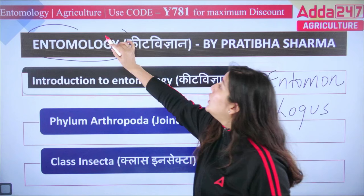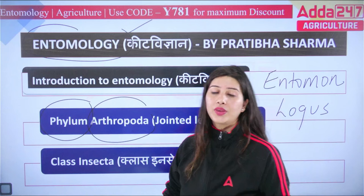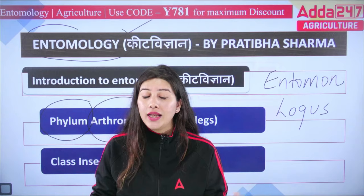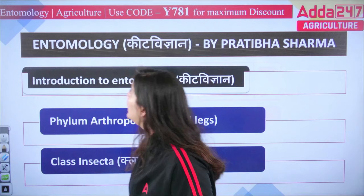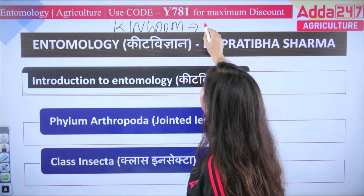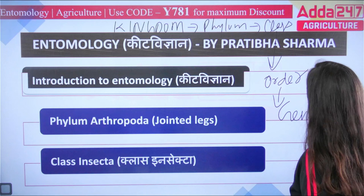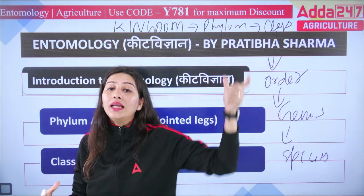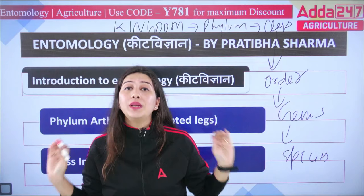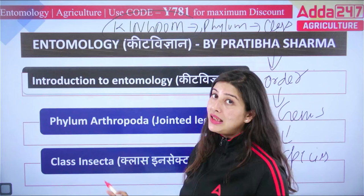Insects belong to the phylum Arthropoda. When we classify any organism, the hierarchy is: Kingdom, then Phylum, then Class, then Order, then Genus, then Species. A mnemonic to remember this hierarchy is: 'Keep Pot Clean, Otherwise Family Get Sick.' The Kingdom is Animalia. The Phylum is Arthropoda — 'arthro' means jointed, 'poda' means legs, so Arthropoda means jointed legs.